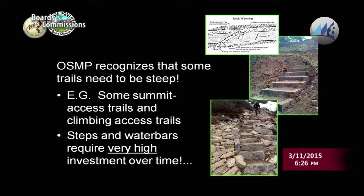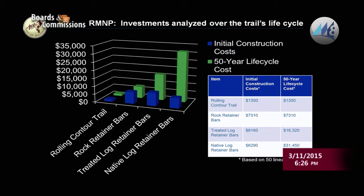We recognize that some trails on the OSMP system need to be steep — summit access, climbing access, or where community interest or resource protection requires it. In those cases, we build structures like steps and retaining walls to support them. However, we must be cognizant that's a high investment of labor and money over time. This is shown in data from Rocky Mountain National Park on 50-year life cycle investment in different trail features.